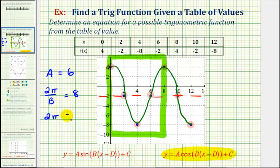So if we multiply both sides by b, we have 2 pi equals 8b, divide both sides by 8, we have b equals pi over 4. So again, so far we know a equals 6, and b equals pi divided by 4.